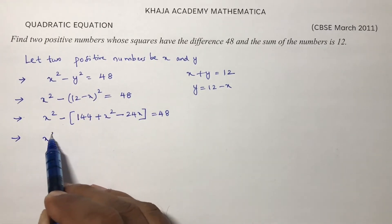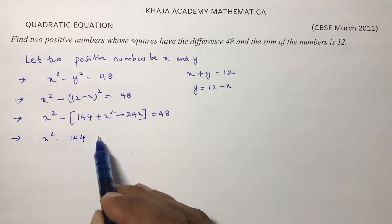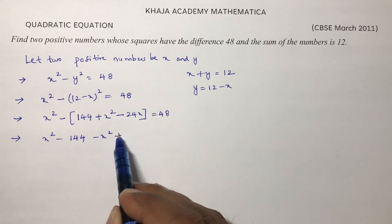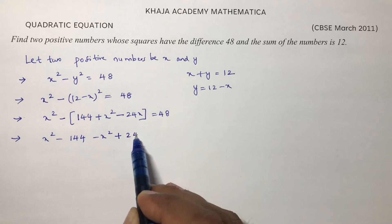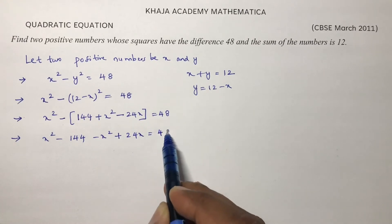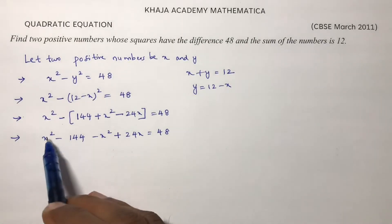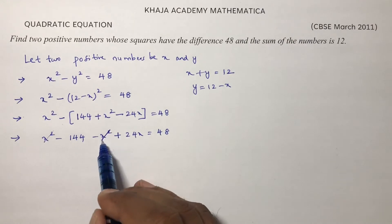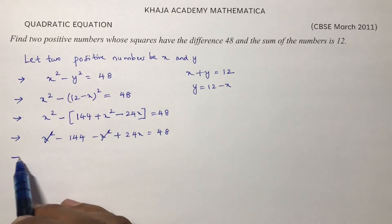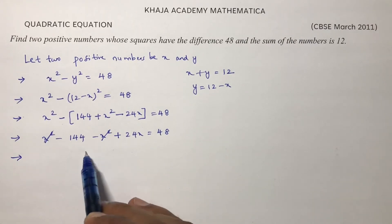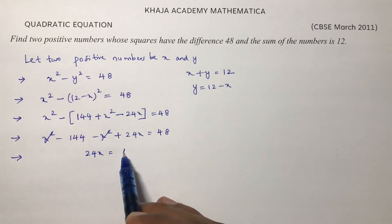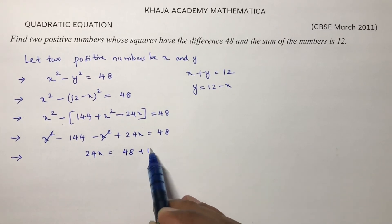x² - 144 - x² + 24x = 48. x² and -x² will get cancelled. So you're left with 24x = 48 + 144.